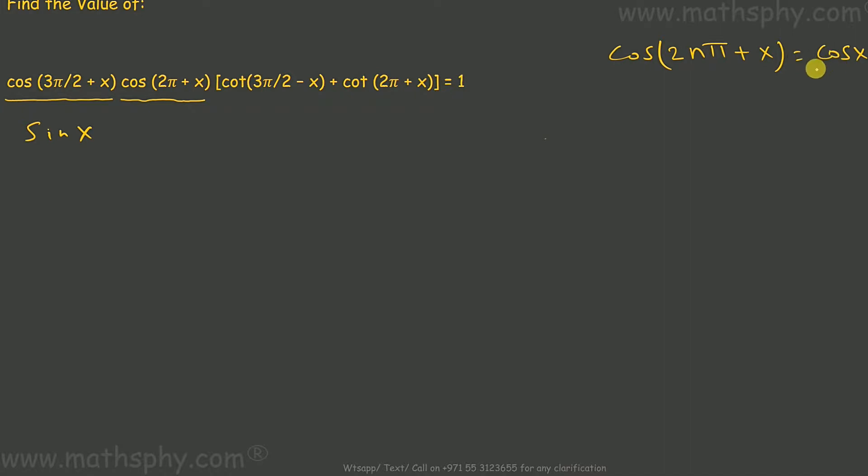In that case, this will be cos x, so this will be as it is cos x. Now cos(3π/2 - x), we have solved this piece also.